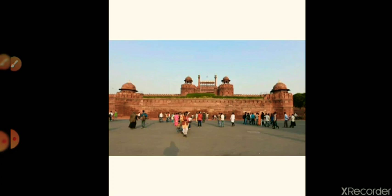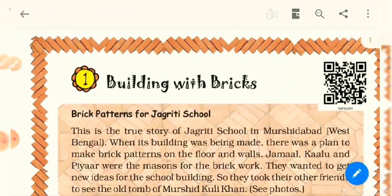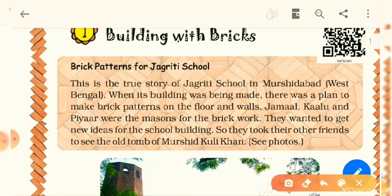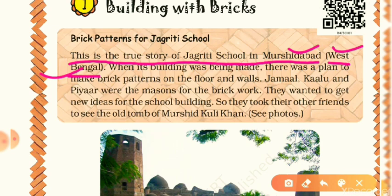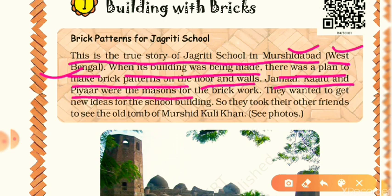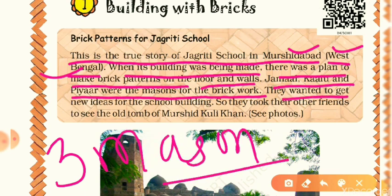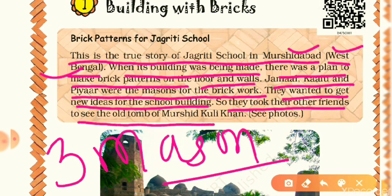I will not tell the name of the last building — you will write its name in the comment box. Now let's come to the lesson and read the first topic: 'Brick Patterns for Jagriti School.' This is the true story of Jagriti School in Murshidabad, West Bengal. When its building was being made, there was a plan to make brick patterns on the floor and walls. Jamal, Kalu, and PR were the masons for the brick work. They wanted to get new ideas for the school building, so they took their friends to see the old tomb of Murshid Kuli Khan.